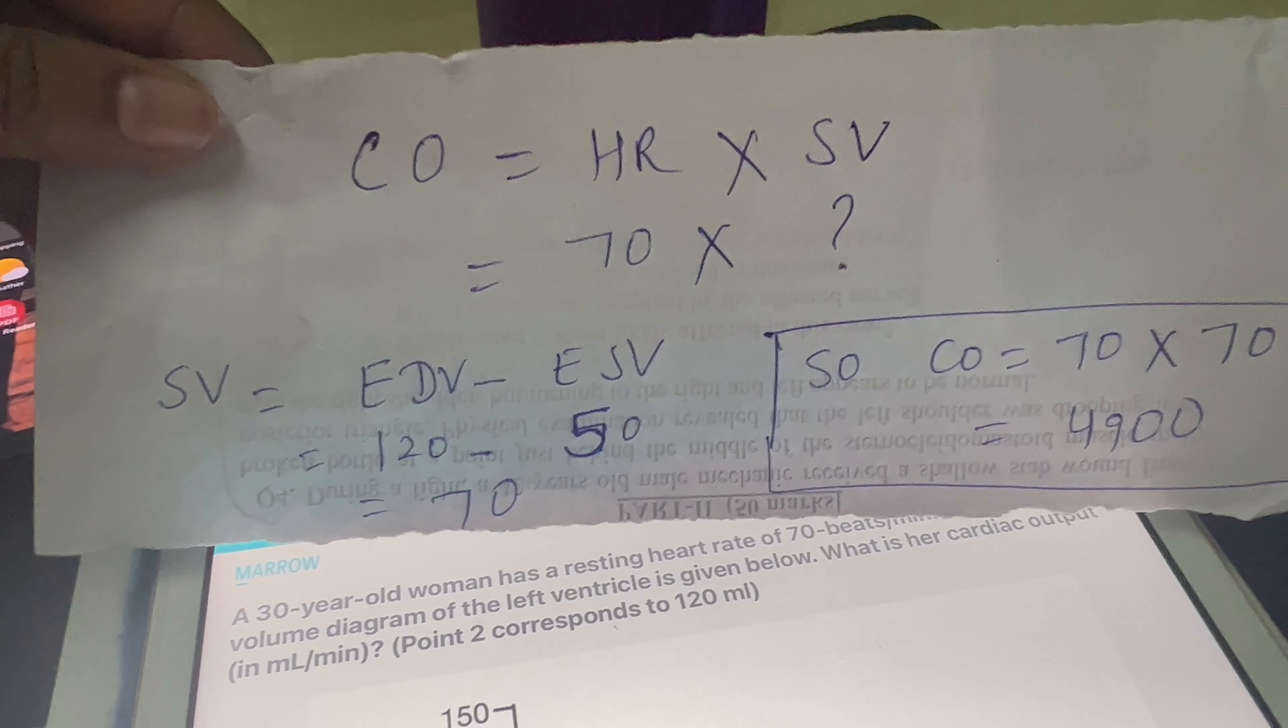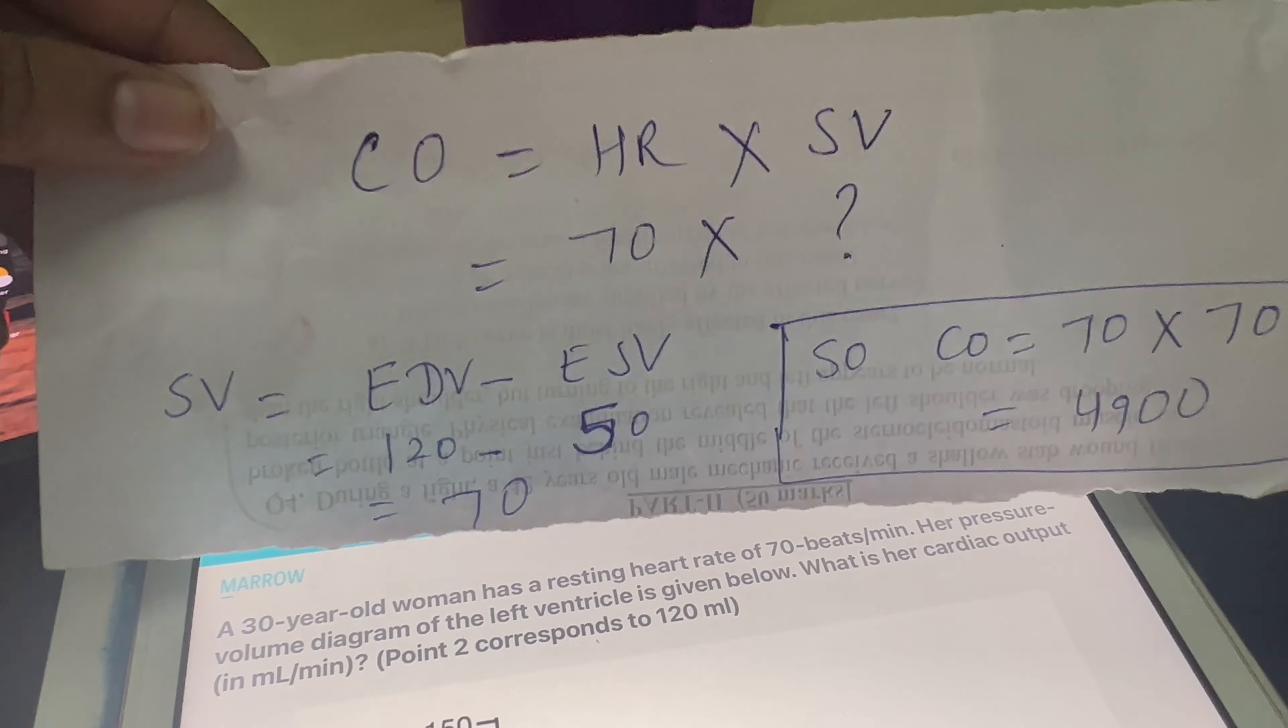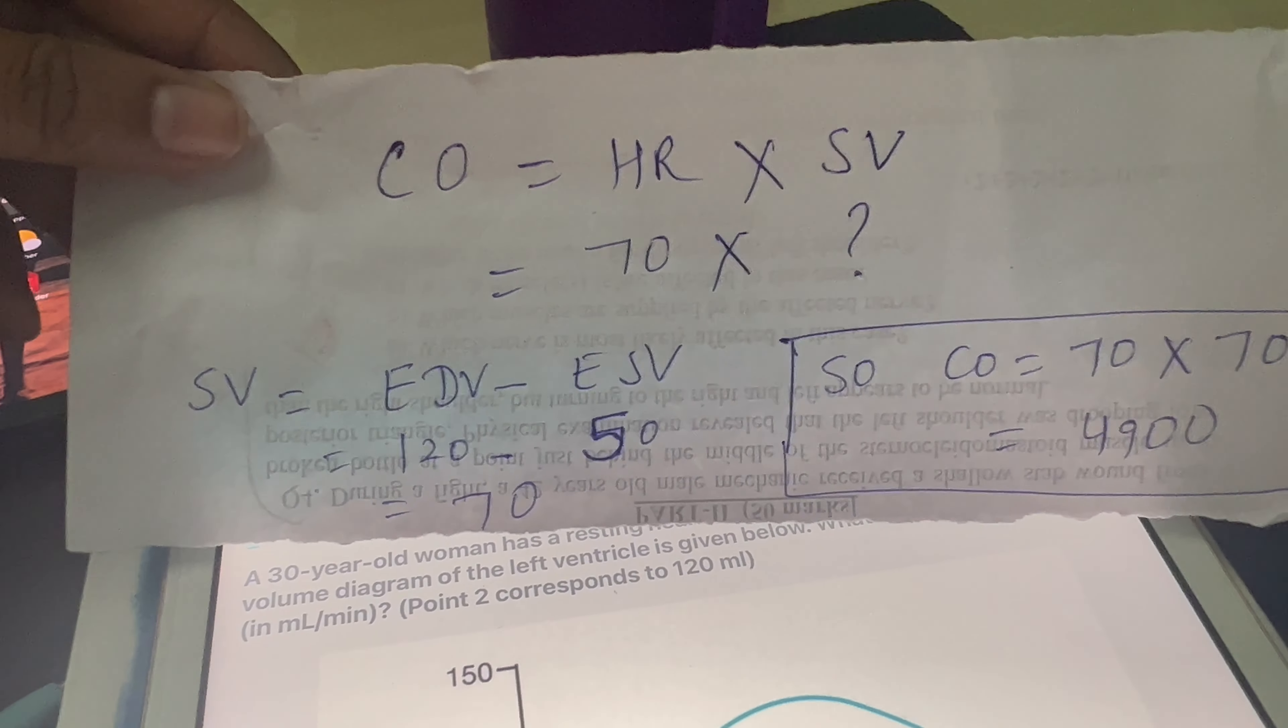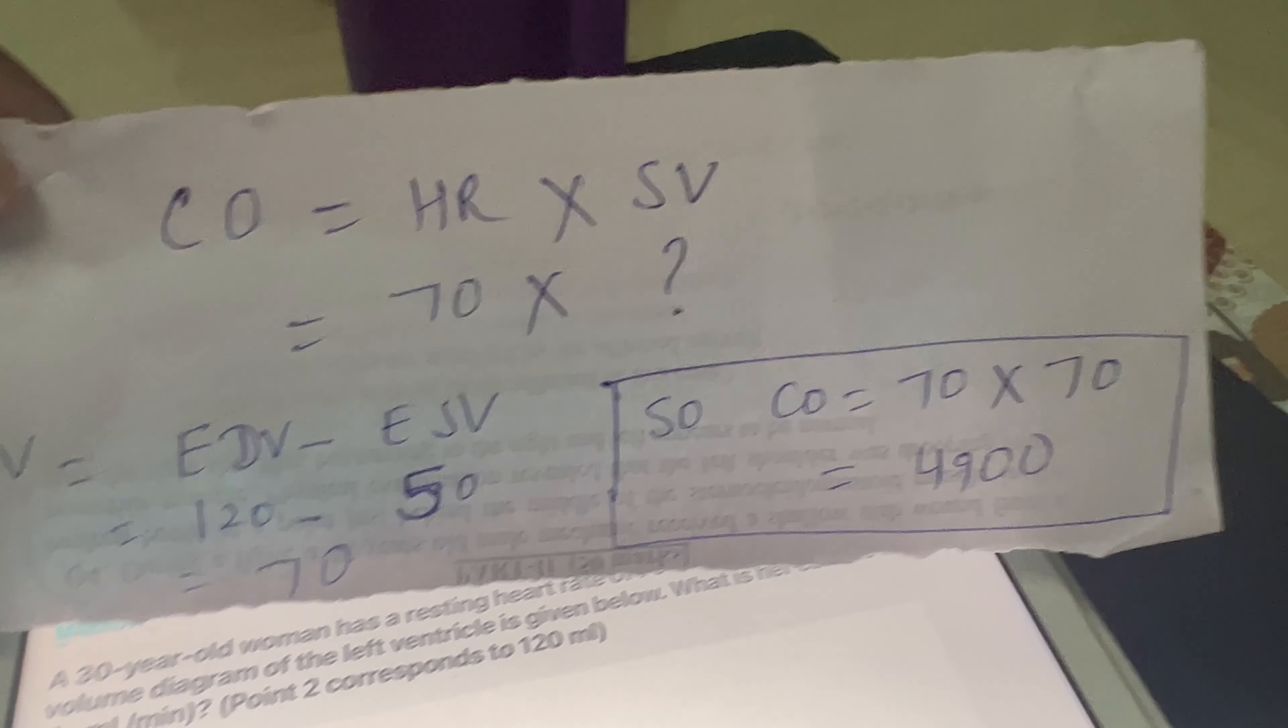The pressure and volume are given in the diagram. The end-systolic volume is 50, which is underneath point 1, and the end-diastolic volume is underneath point 2, which is 120. Point 2 corresponds to 120 ml as given in the question.